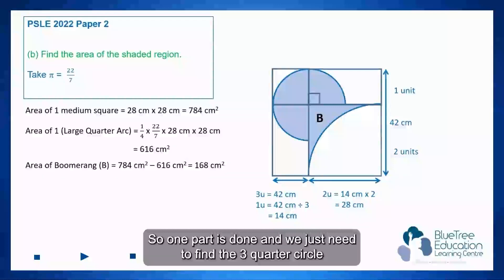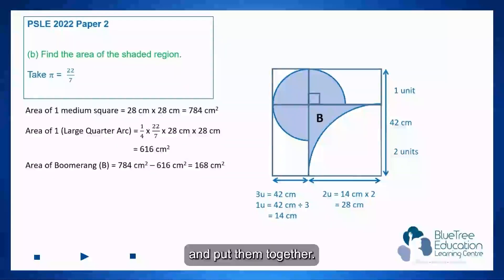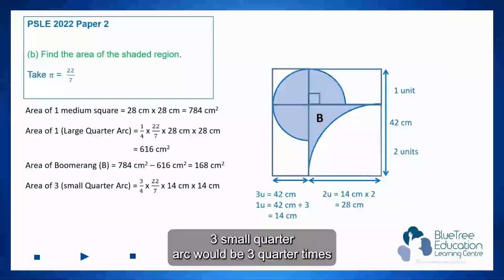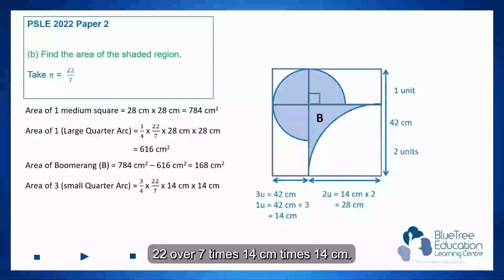So one part is done and we just need to find the three-quarter circle and put them together. So the area of the small quarter arc would be three-quarter times 22 over 7 times 14 cm times 14 cm. So the answer is 462.